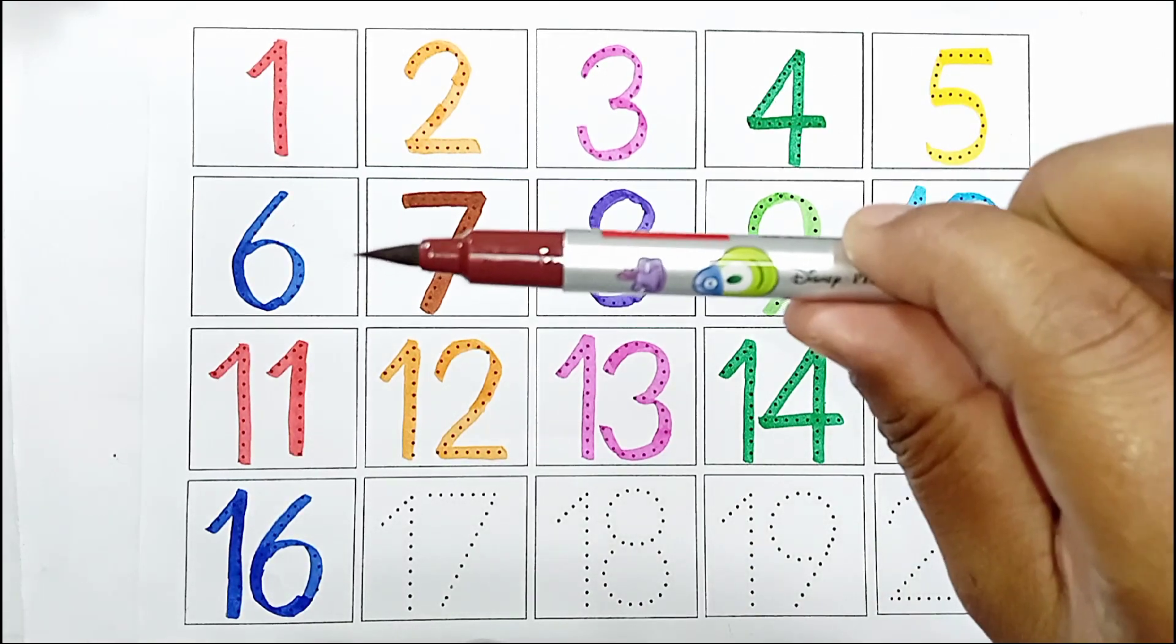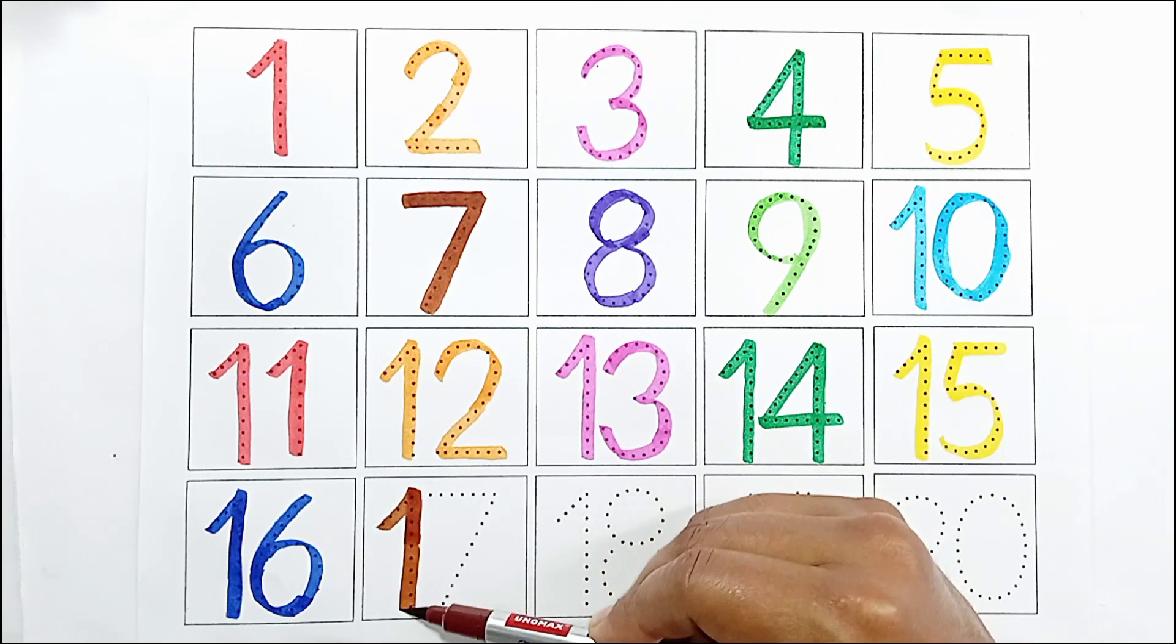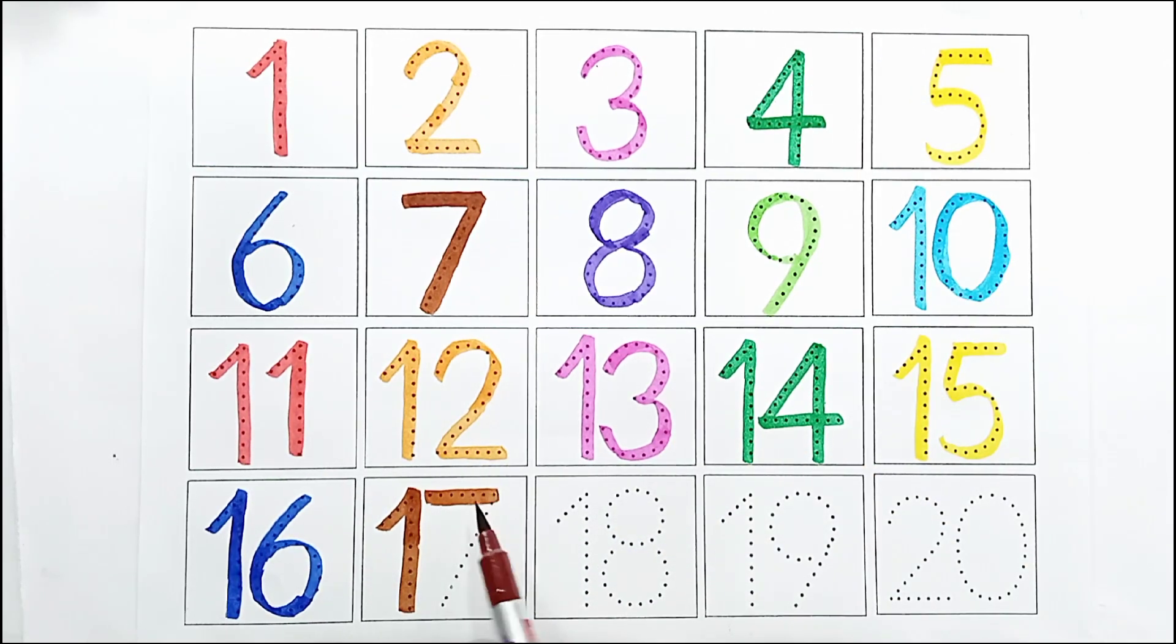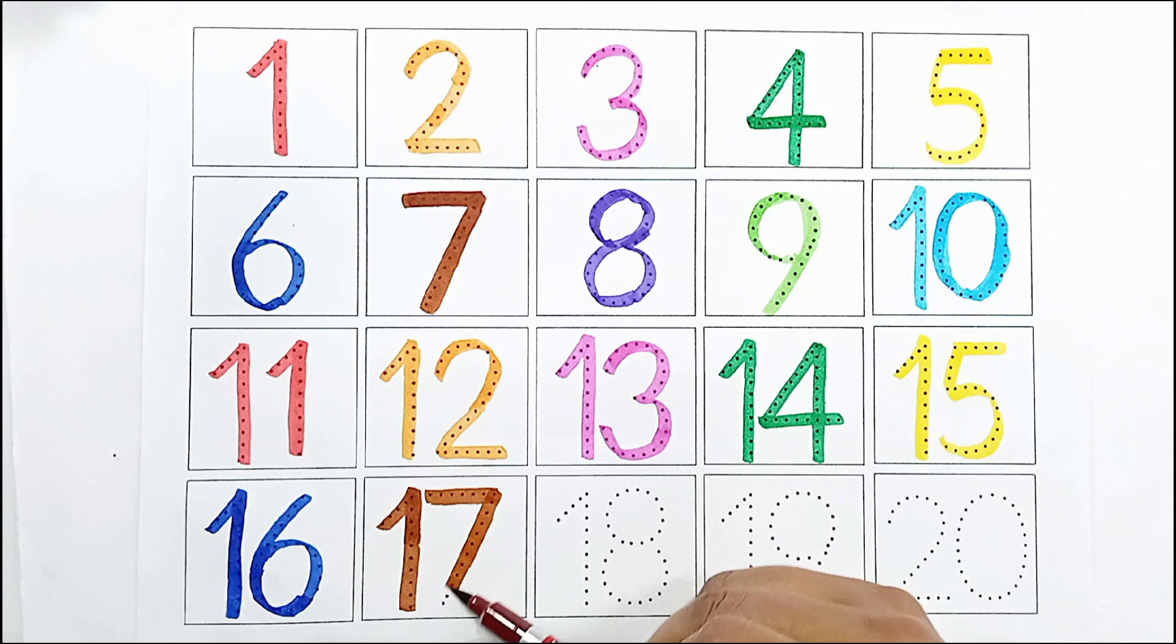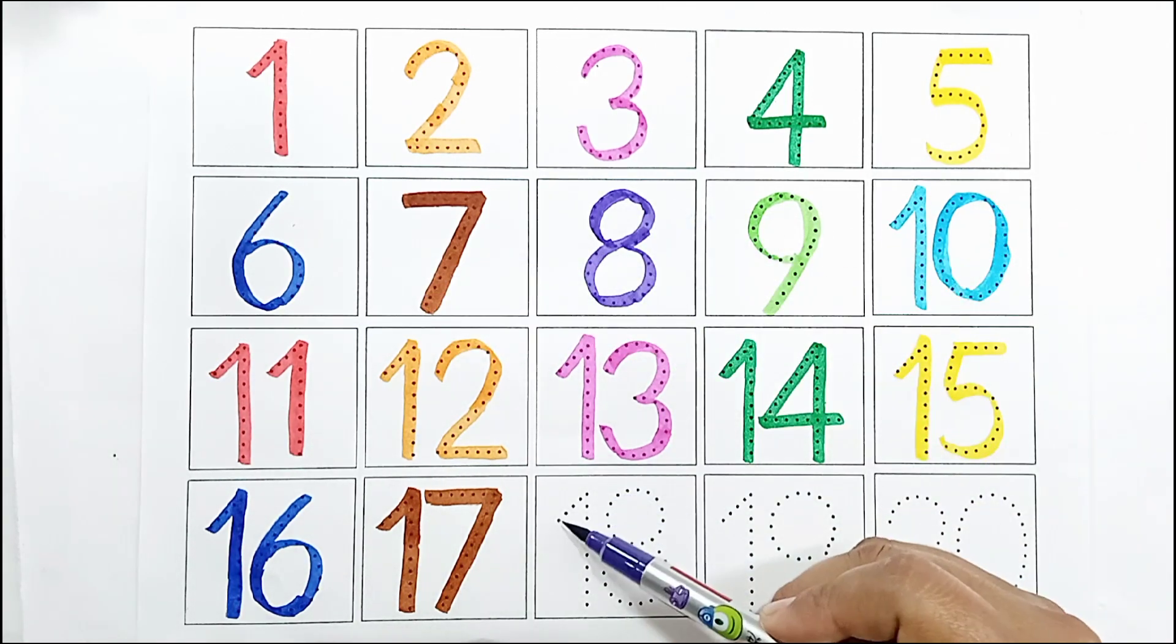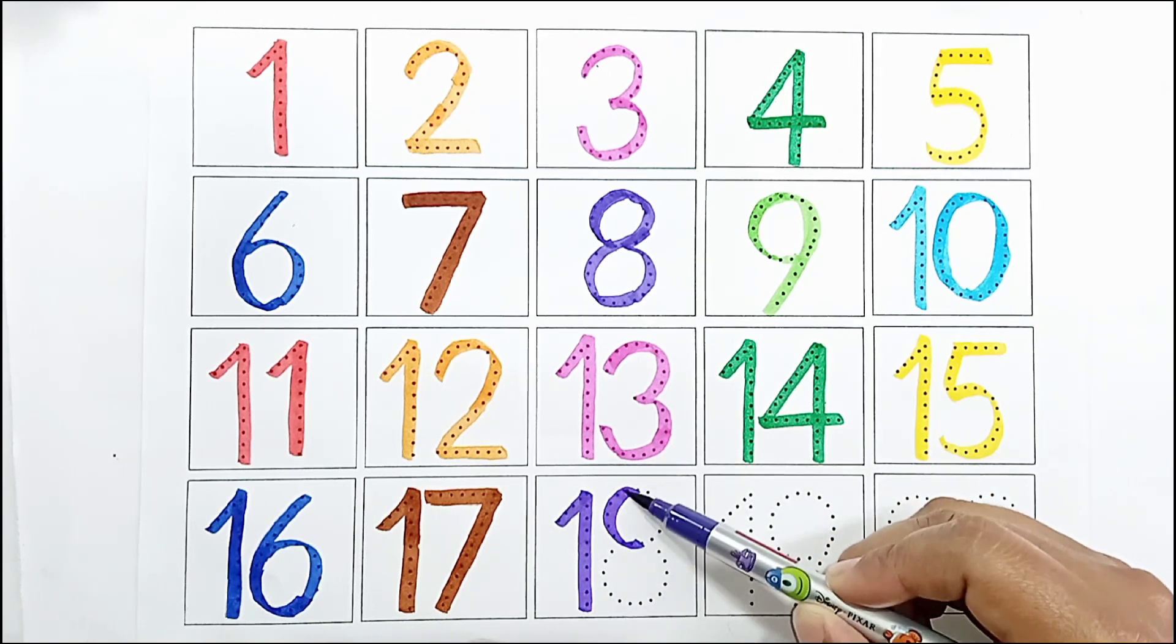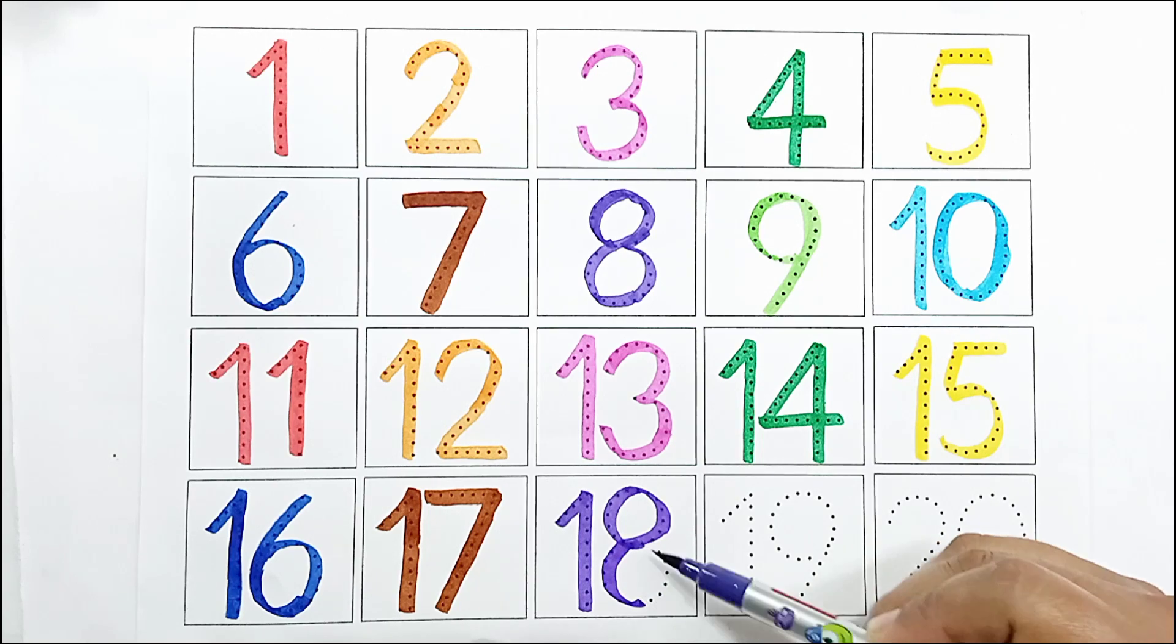Brown color. One seven, seventeen, seventeen. Violet color. One eight, eighteen, eighteen.